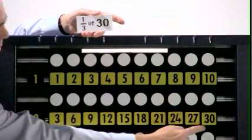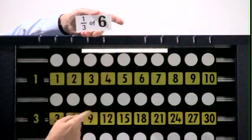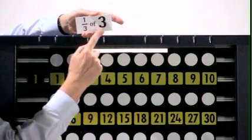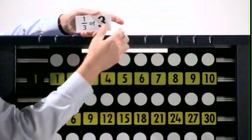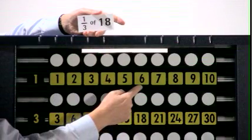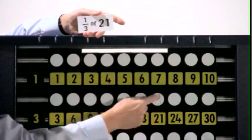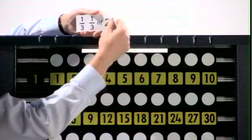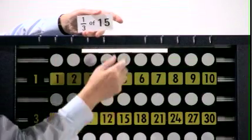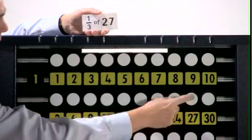One third of thirty is ten. One third of six is two, one third of three is one, one third of eighteen is six. One third of twenty-one is seven. One third of fifteen is five. One third of twenty-seven is nine.